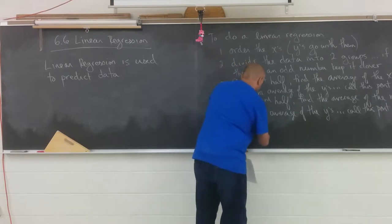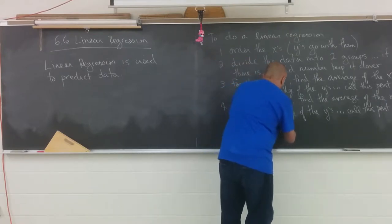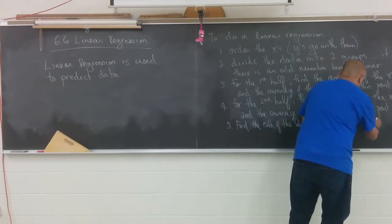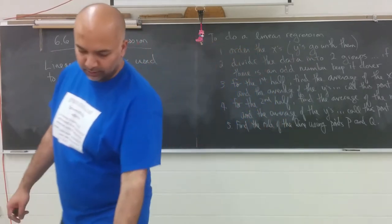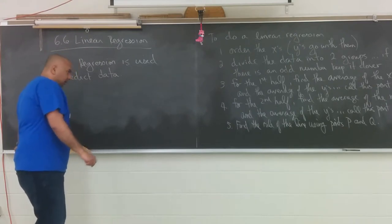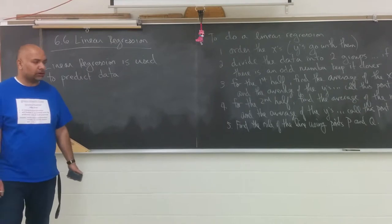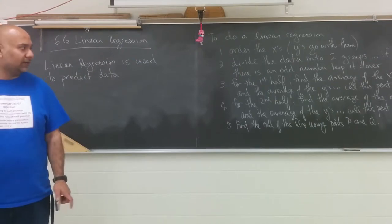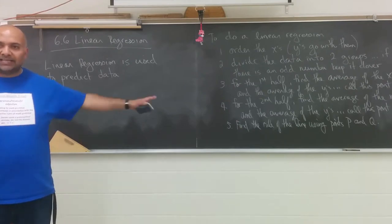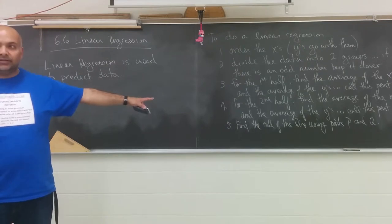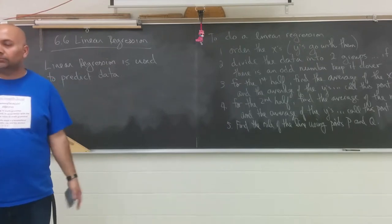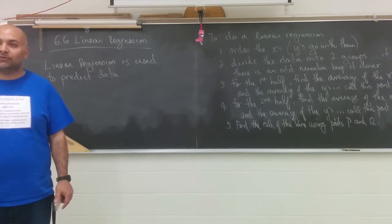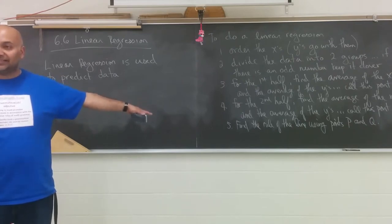Finally, last step: find the rule of the line using points P and Q. It's a lot of steps, but everything here is straightforward — there's nothing crazy different, we've done all these things already. In fact, it's a nice way to end the year, because the last step of our last lesson is the first thing we did this year: find the rule of the line. Literally find the a, find the b. A is y2 minus y1 over x2 minus x1, and b is y1 minus a times x1.